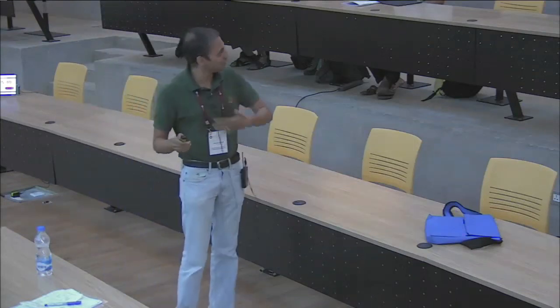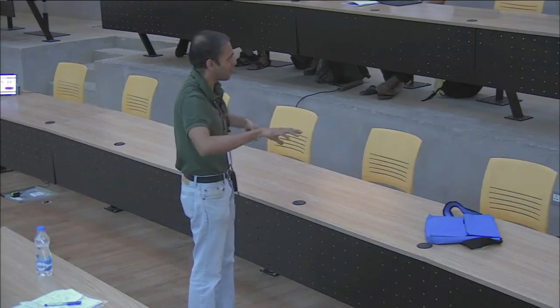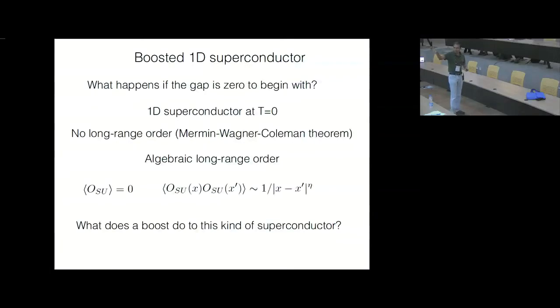This is an example of a superconductor which has no long-range phase coherence but nevertheless is a superconductor, and the question we've asked is: what does a boost do to this kind of superconductor? By boost I mean you can think of the superconductor as flowing with a certain velocity, but I will define boost a little more carefully in a couple of slides.